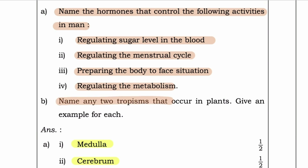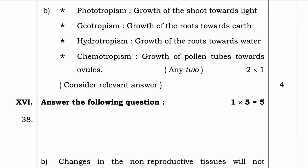Question B: Name any two tropisms that occur in plants and give an example for each. Answer: Phototropism — growth of the shoot towards light. Geotropism — growth of the root towards the earth. Hydrotropism — growth of the roots towards water. Chemotropism — growth of the pollen tubes towards ovules. You can write any two.